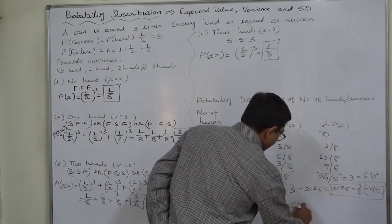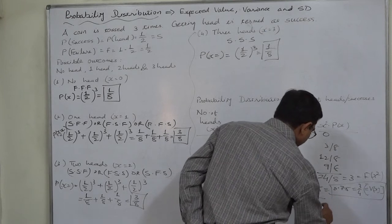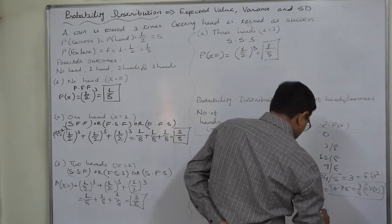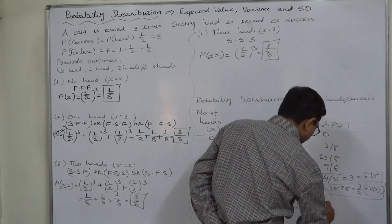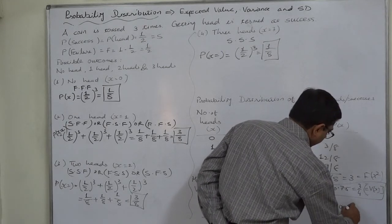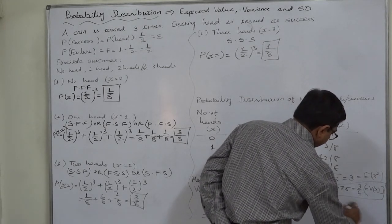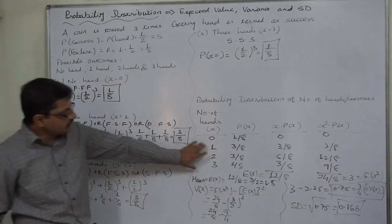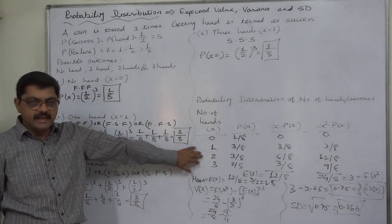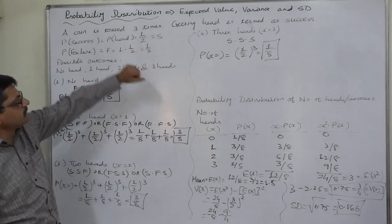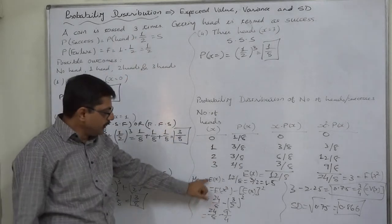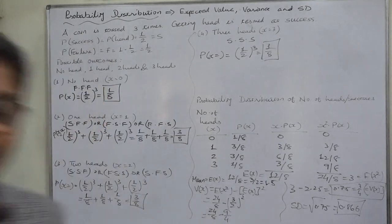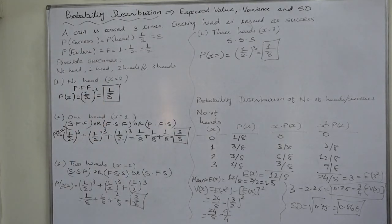The standard deviation is the square root of the variance, that is the square root of 0.75, which equals 0.866. This is the probability distribution of the number of heads when a coin is tossed three times, along with its mean, variance, and standard deviation. Thank you.